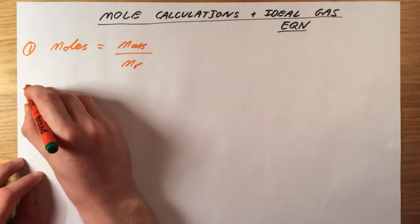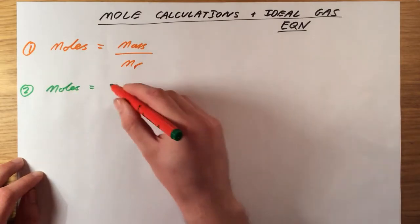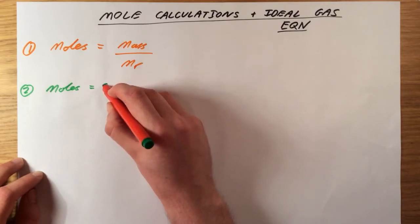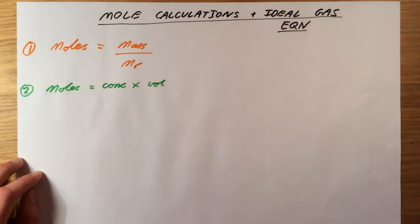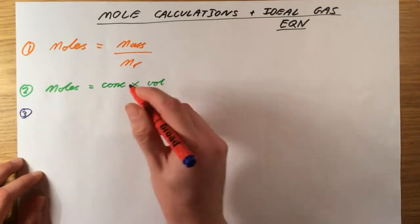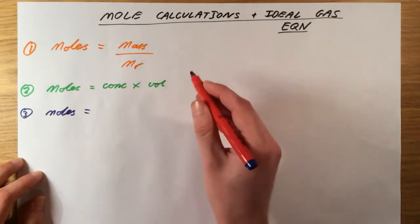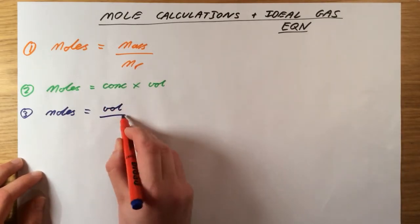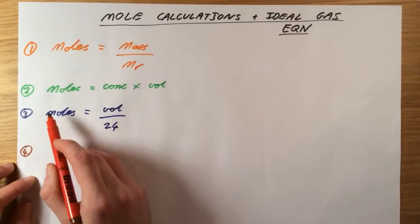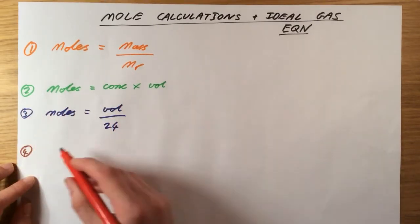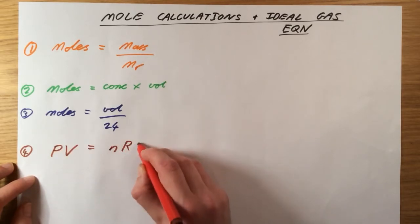Our second equation is all about concentrations. So moles equals a substance's concentration times its volume. Our third equation is about volumes. It's the number of moles of a gas, I should say an ideal gas at room temperature and pressure, is its volume divided by 24. And finally our ideal gas equation, which is related to this one but gives it under a wider range of conditions, is PV equals nRT.